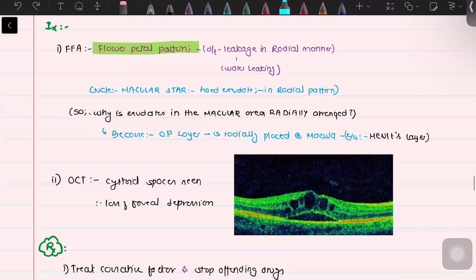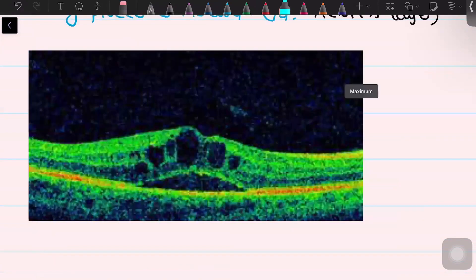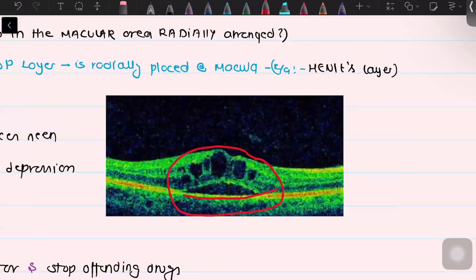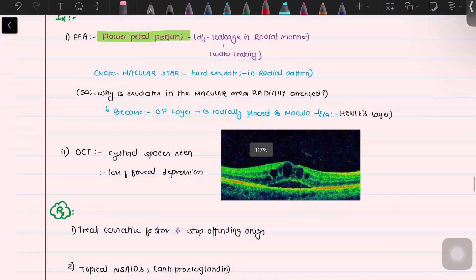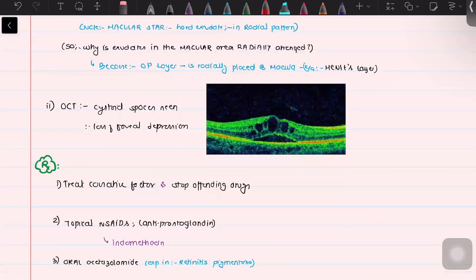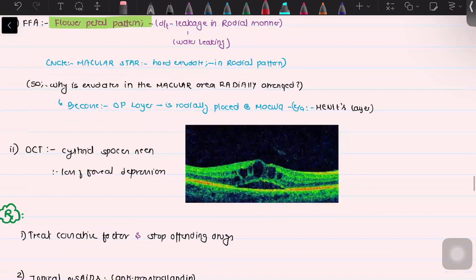The next investigation is optical coherence tomography. On OCT, we can see that in between the layers of the retina there are multiple cystic spaces — this is a characteristic finding. Along with that, there is detachment of the retina from the retinal pigment epithelium, and there is loss of the normal foveal depression.